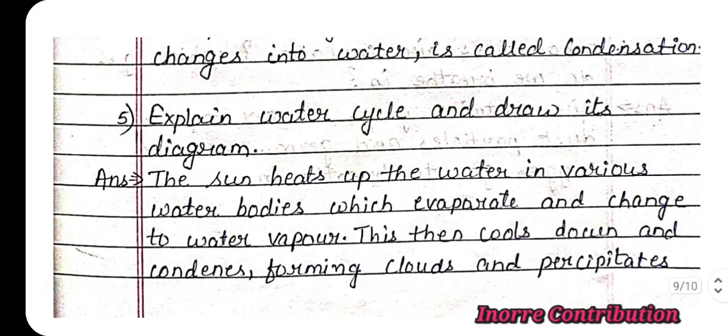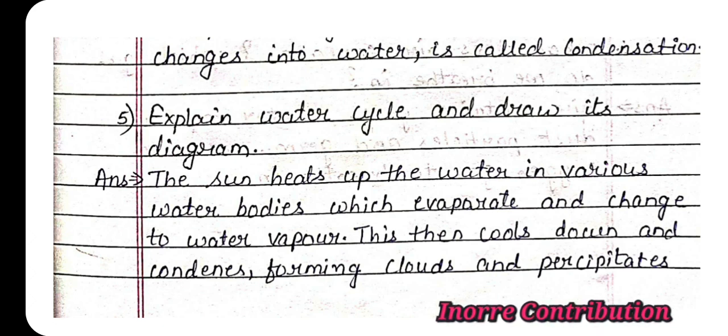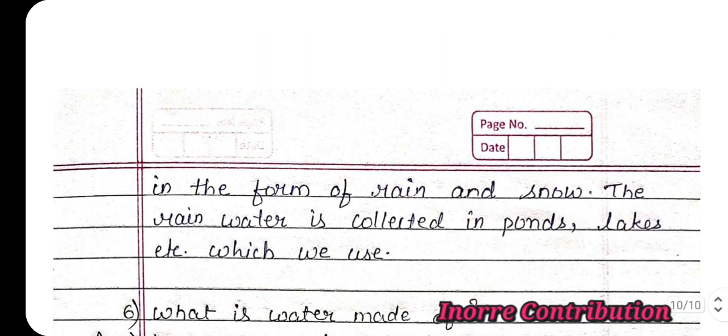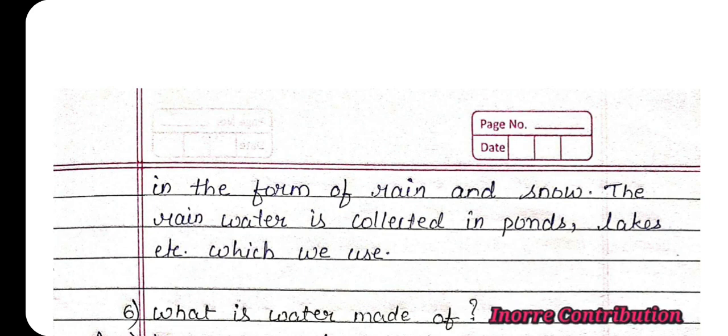Question number 5, explain water cycle and draw its diagram. Answer: The sun heats up the water in various water bodies which evaporate and change to water vapor. This then cools down and condenses forming clouds and precipitates in the form of rain and snow.